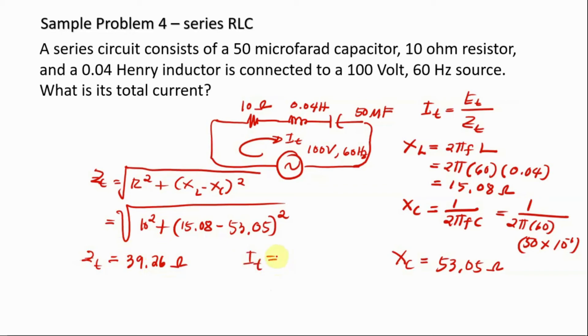And then you substitute it in your formula for solving the current. So for E source we have 100 volts and our Z_T is 39.26. So therefore, the current we have is 2.55 ampere. This is our current. Thank you.